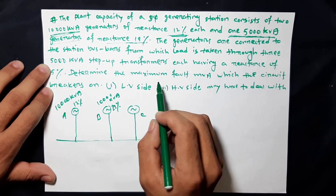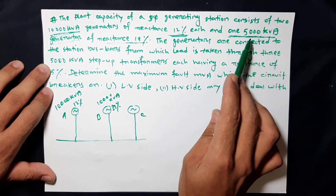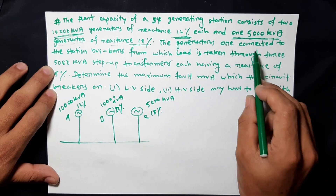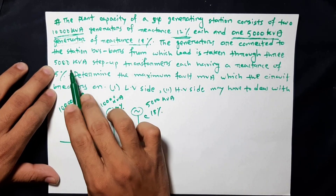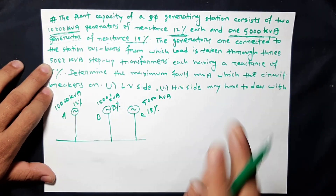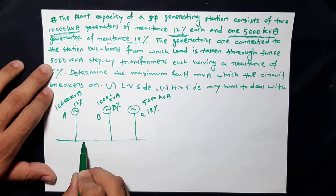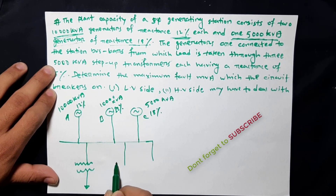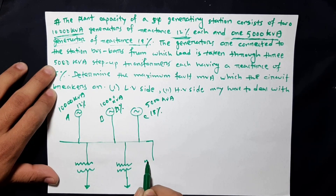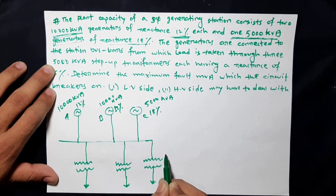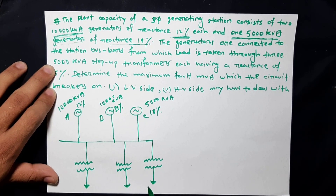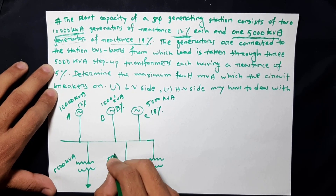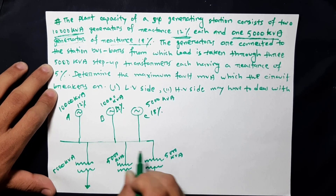The generators are connected to the station bus bar, and load is taken through three step-up transformers. We use three step-up transformers: one, two, three. The voltage is stepped up — it will be low voltage side or high voltage side. This is the passenger KVA transformer with 5% reactance.